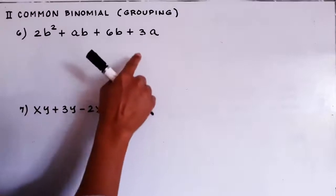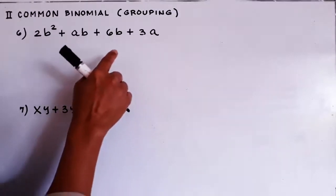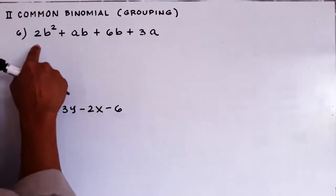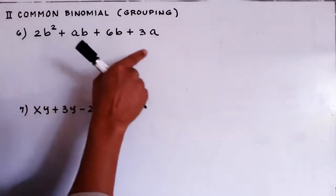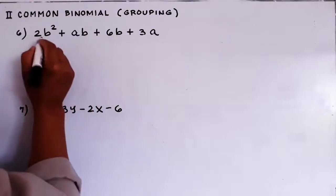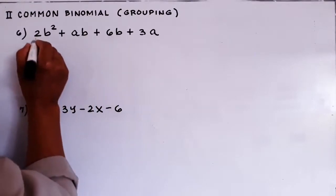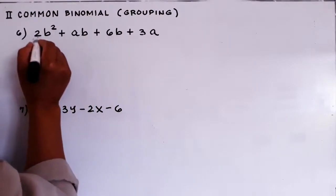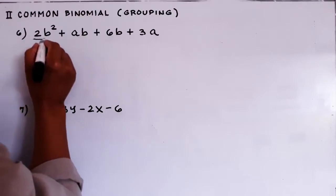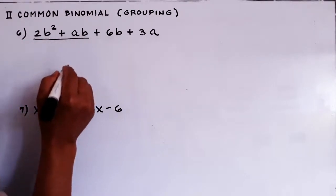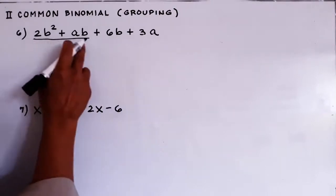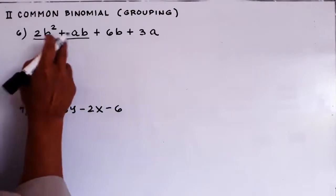They are all positive so there is no problem here. We need to group them into two groups — the first group is a binomial and the second group is also a binomial — and see if they are arranged or if we don't need to arrange them anymore. So if we have this one, do we have a common binomial here? We need to see if we have a common monomial.